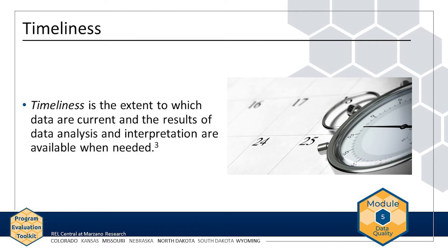Now let's turn to timeliness. Timeliness is the extent to which data are current and the results of data analysis and interpretation are available when needed. For example, if the goal of AMP is to improve students' rate of homework completion, the evaluation team should continually collect data on homework completion while the program is being implemented, in order to assess whether the program is having an effect on students' rates of homework completion. If the team does not collect data within an appropriate time frame, the data will not be helpful in addressing the evaluation questions.